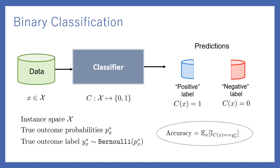The goal of classification is to find c such that c(x) is as close as possible to y_x*. This is captured by the metric accuracy, which is the expected number of individuals whose c(x) is exactly equal to y_x*.